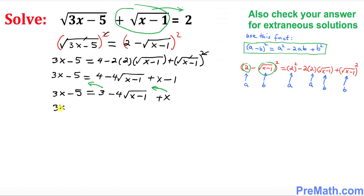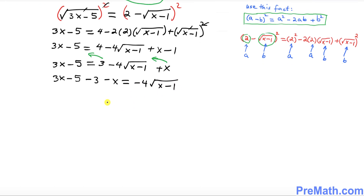When we move 3 to the other side it becomes negative 3, and moving x gives negative x, leaving 4 times square root of x minus 1 isolated. Combining like terms: 3x minus x becomes 2x, and minus 5 minus 3 gives minus 8, so we have 2x minus 8 equals negative 4 times square root of x minus 1.